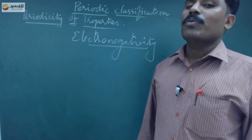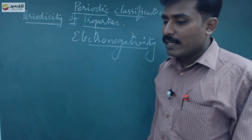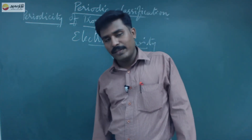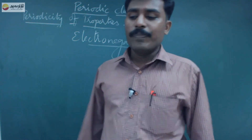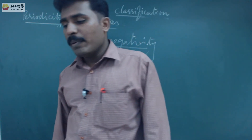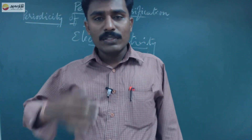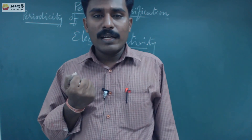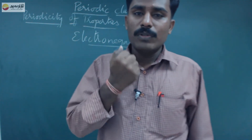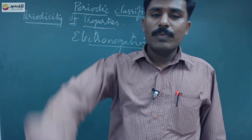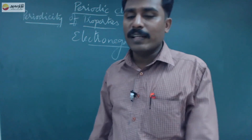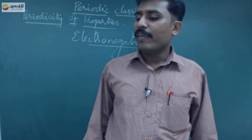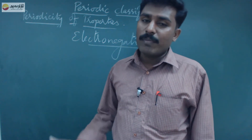Next, a very important question: the difference between electron gain enthalpy — that is, electron affinity — and electronegativity. Electron affinity may be defined as the energy released when one isolated gaseous neutral atom accepts one electron. That is called electron affinity. This is the isolated gaseous atom attracting an electron.